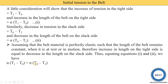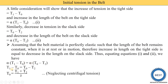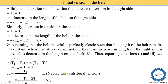Setting Equation 1 equal to Equation 2: α(T1 − T0) = α(T0 − T2). Since alpha is the same on both sides, it cancels out. Rearranging: T1 + T2 = 2T0, so T0 = (T1 + T2) / 2. This is the equation for initial tension neglecting centrifugal tension. If we consider centrifugal tension Tc, the equation becomes T0 = (T1 + T2 + 2Tc) / 2.